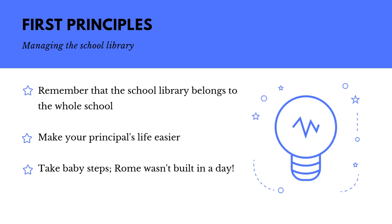A third principle is to remember that Rome wasn't built in a day. Baby steps is the best way to go, especially if you are new to the school as well as to your teacher librarian position. Take the long view and develop your library and your role strategically. If you can see some low hanging fruit — that is, some goals that will have great impact and which are easily achievable — by all means do them, because that's a great way to share some achievements quite quickly. But remember that developing the school library presence and your own reputation in the school will take time.